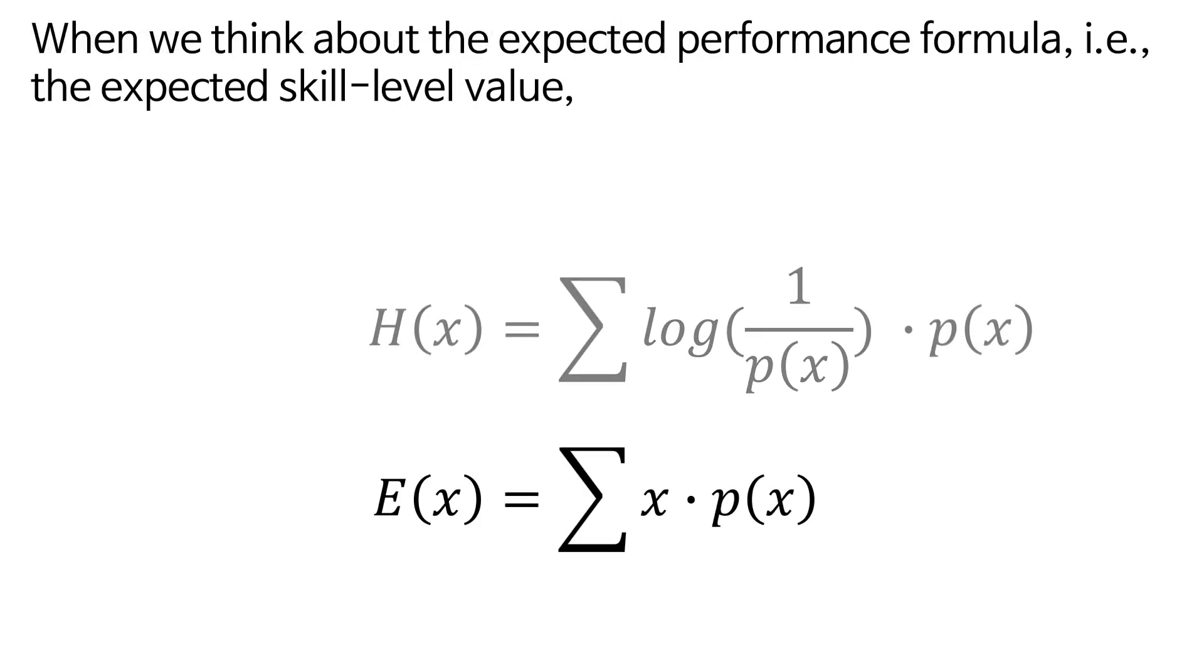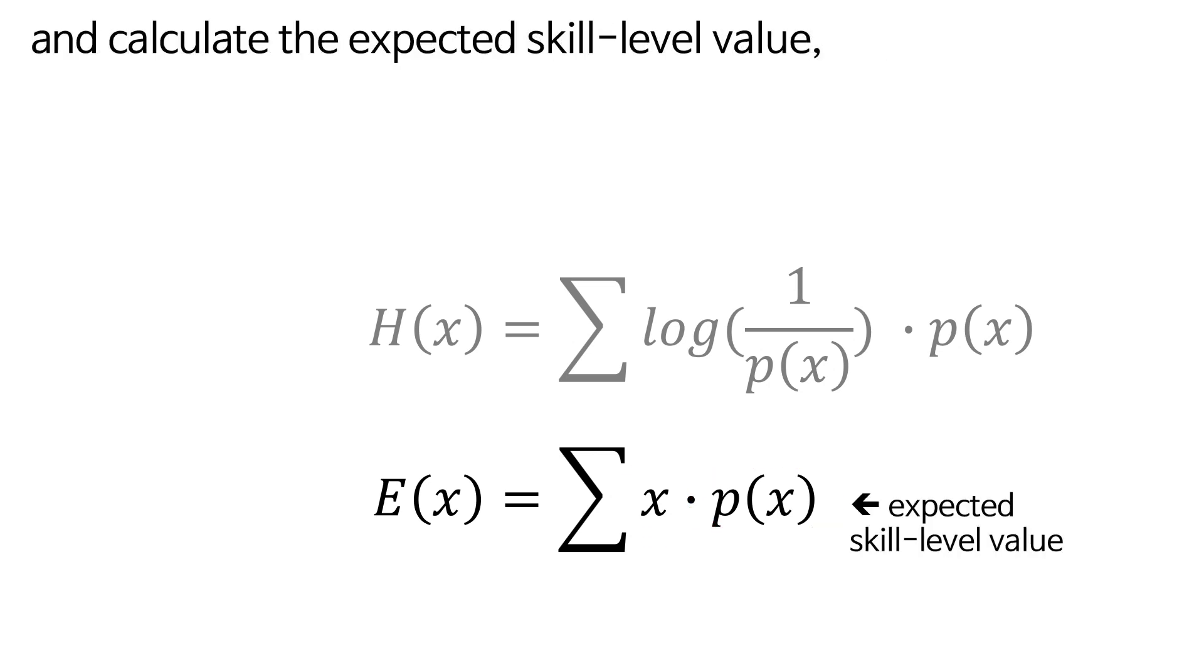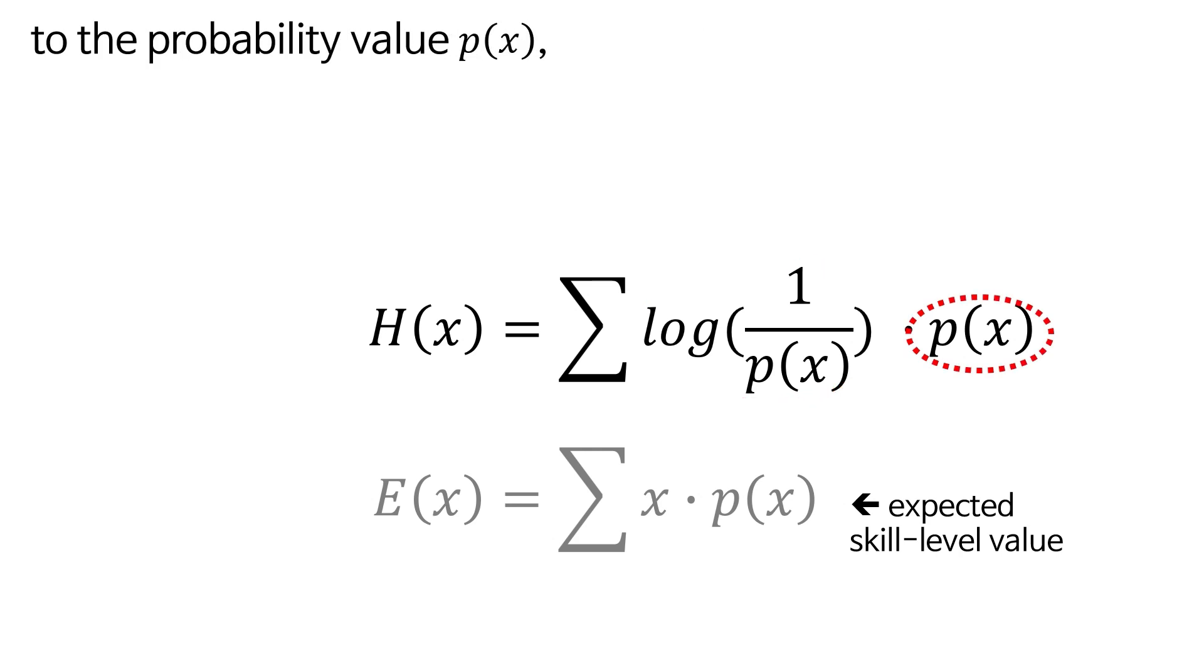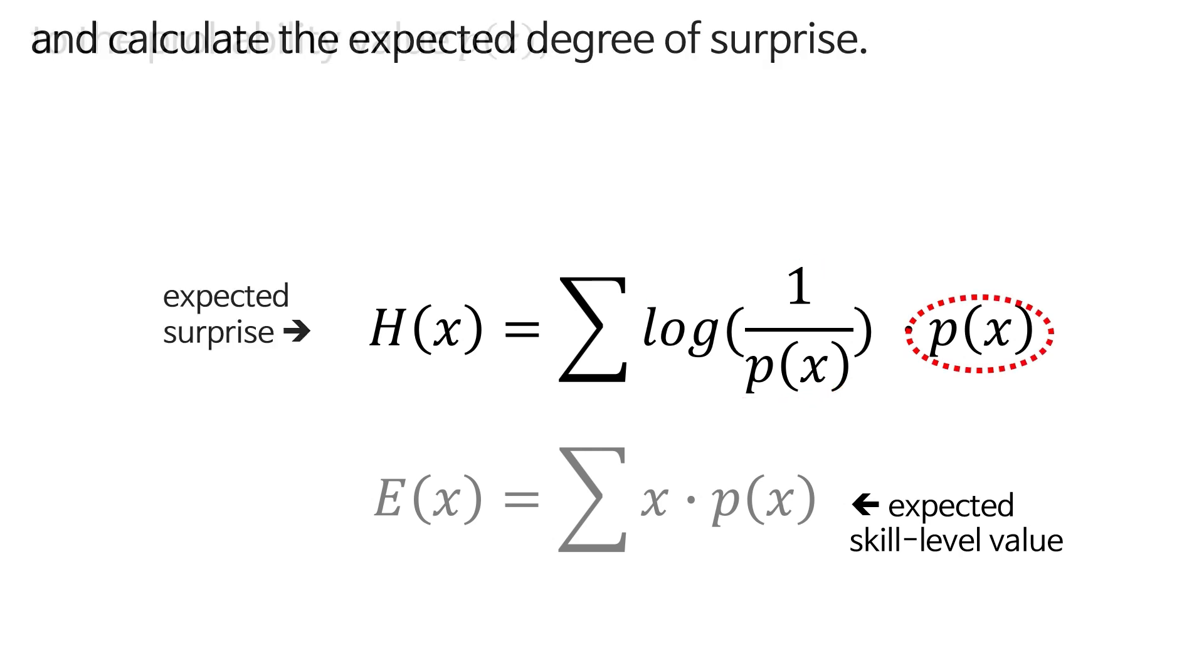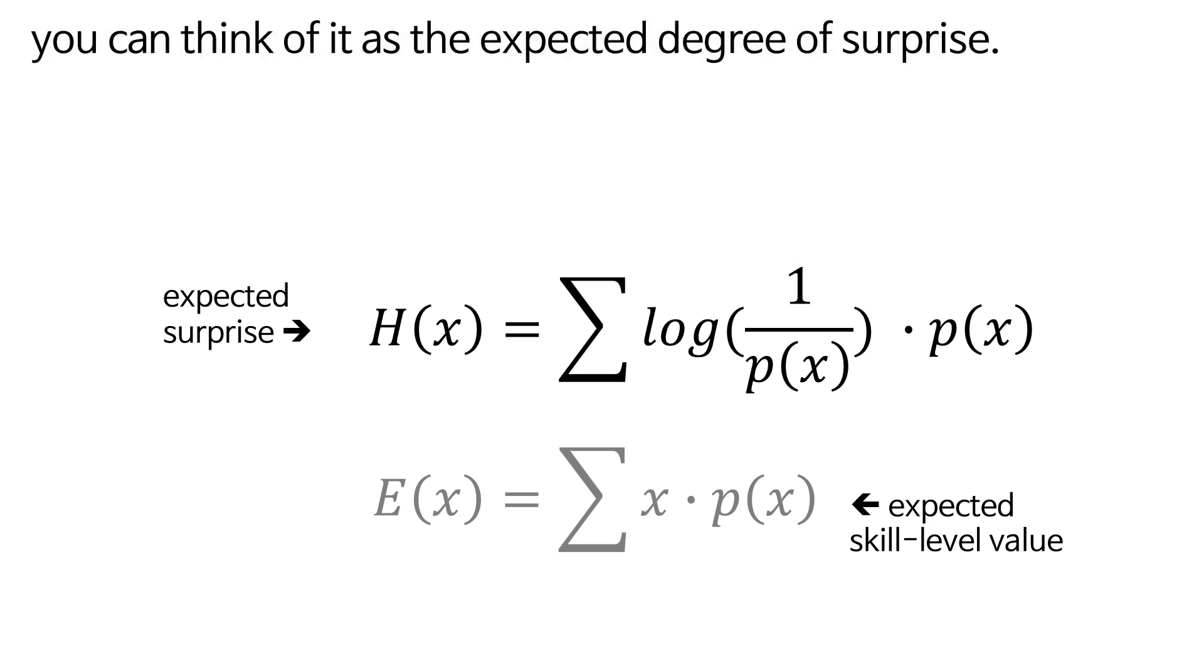When we think about the expected performance formula, in other words, the expected skill level value. If you attach the objective skill level x to the probability value p(x), and calculate the expected skill level value, now you can attach the objective surprise value to the probability value p(x), and calculate the expected degree of surprise. So, entropy is not something particularly difficult. You can think of it as the expected degree of surprise.